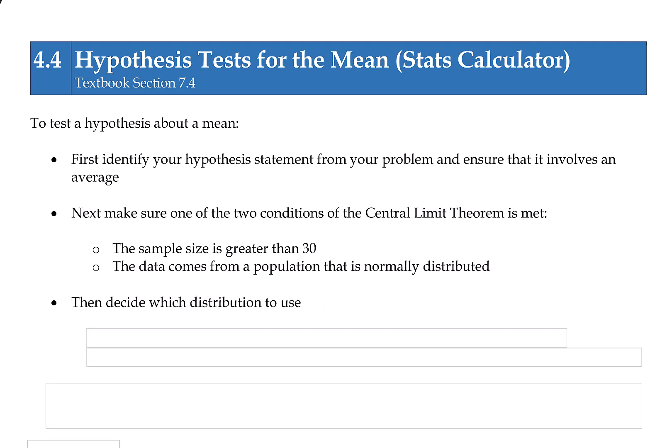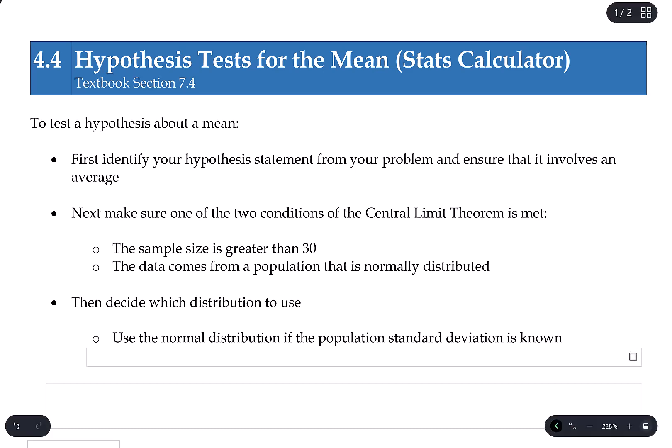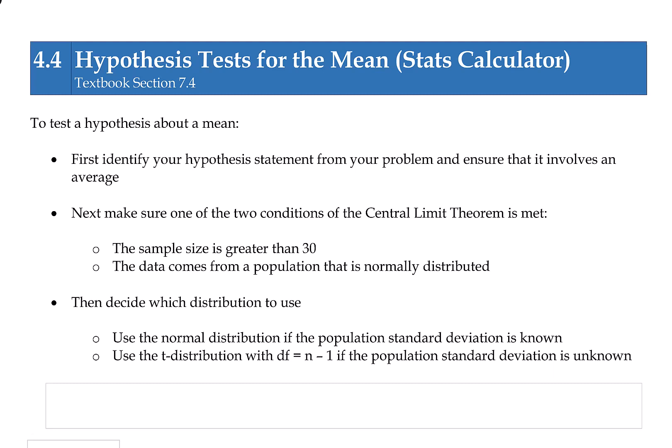Then we have to decide, when doing a hypothesis test for the mean, which distribution we're going to use. Our choices are the normal distribution or the t-distribution. The normal distribution is used if the population standard deviation happens to be known, which is uncommon. So for the most part, we would be using the t-distribution with degrees of freedom one less than our sample size, since we generally do not know the population standard deviation.